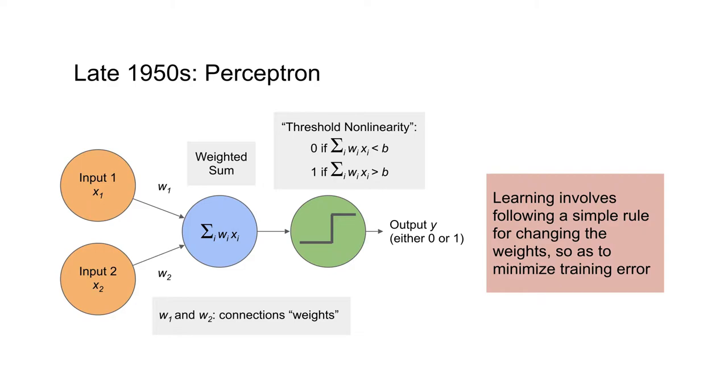The learning algorithm for perceptrons involves adjusting the weights, here weight one and weight two, and actually also the threshold B, so as to learn a certain mapping from the input neurons to zero or one outputs, which could be, for example, cat or dog.